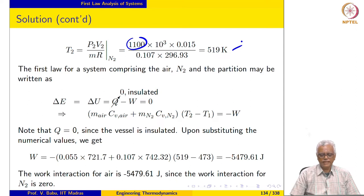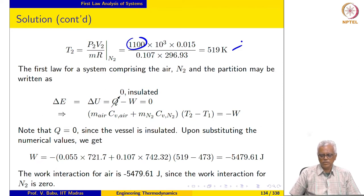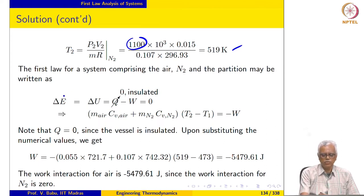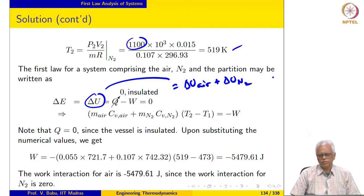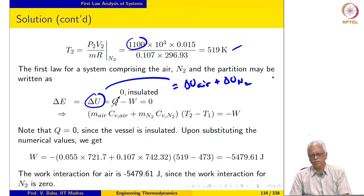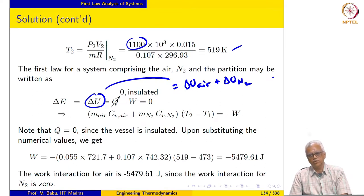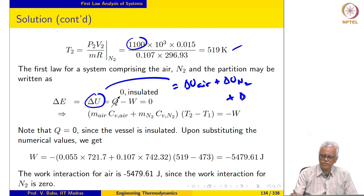If we take the system to be air plus nitrogen plus partition, we can evaluate the first law. Remember, the partition does not store any energy — there is no change in energy of the partition. So delta E equals delta U of air plus delta U of nitrogen. The fact that we are neglecting the energy stored in the partition is not a limitation; if properties of the partition are known, we can easily include that in the expression.